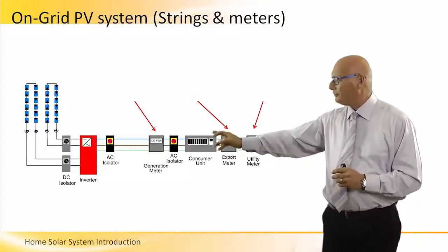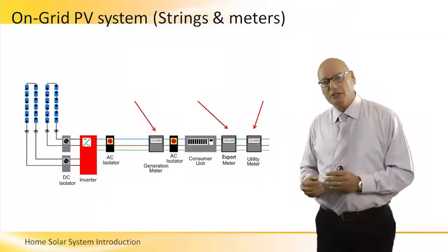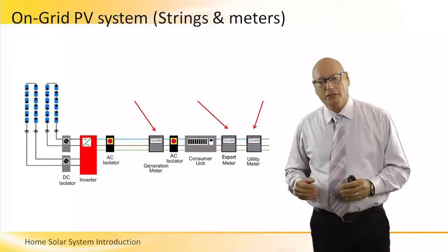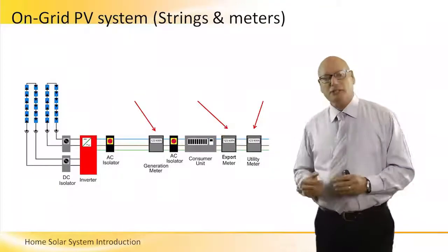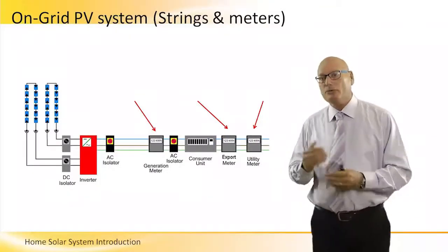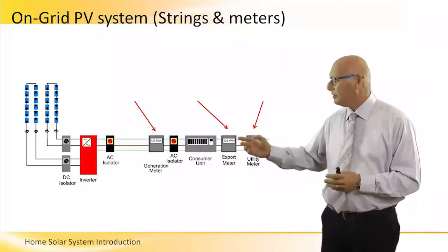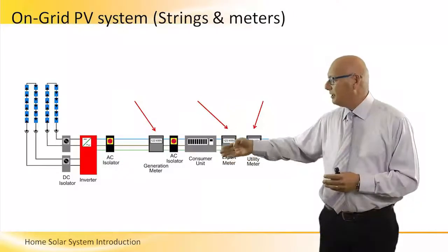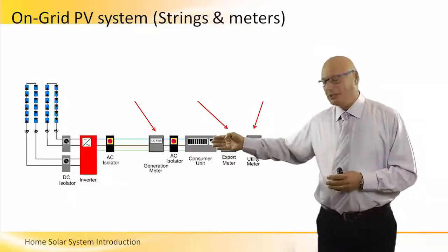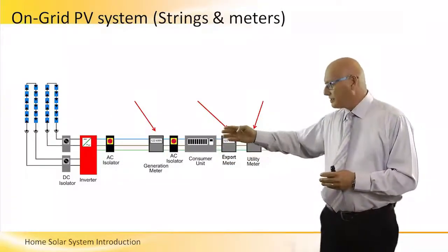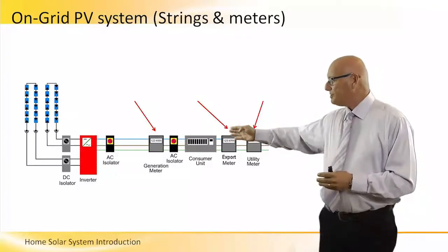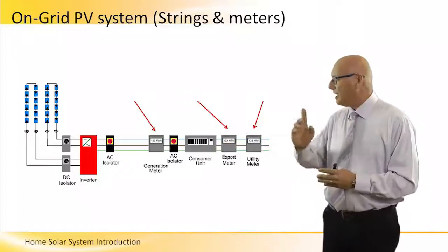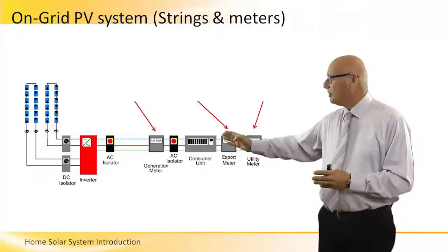The red box inverter receives DC — in this example there are two strings. The inverter receives DC coming from the panels and converts it into AC. There is an AC isolator immediately after the inverter. If there is no power cut, the energy — the AC voltage — goes automatically to a meter.